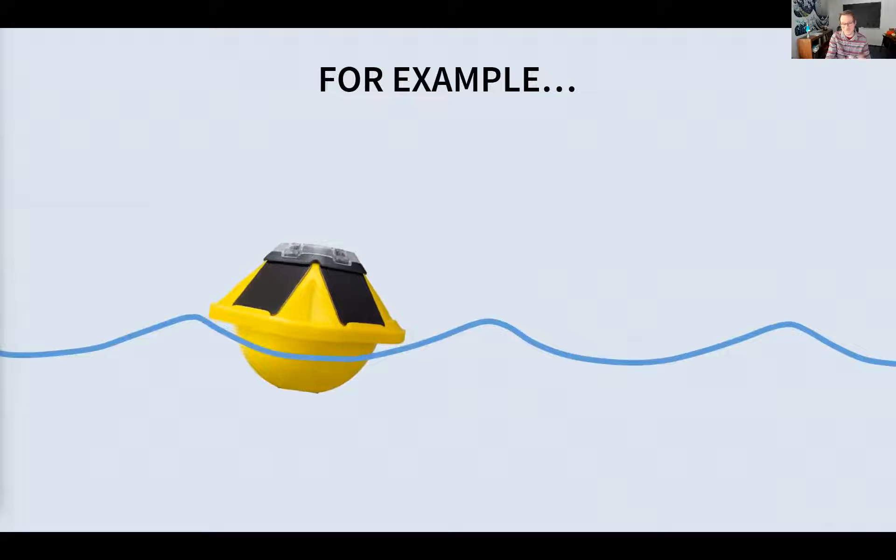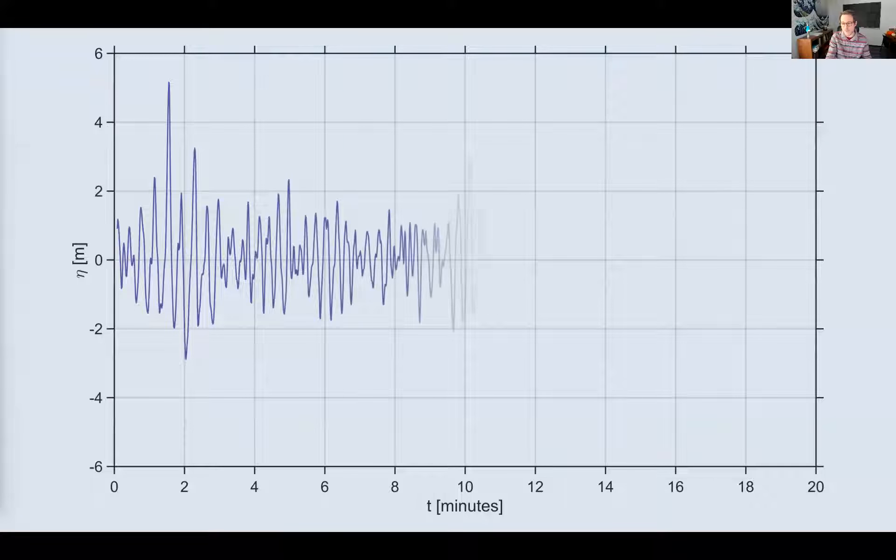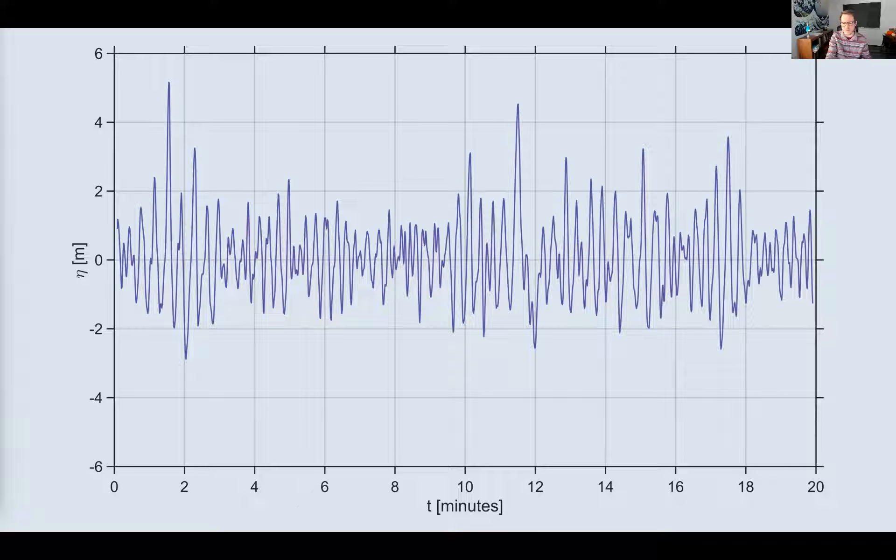As an example, let's look at a wave buoy. Wave buoys record and telemeter surface wave kinematics at a single point. They can sit out in the ocean for years, giving us long time series of wave conditions at their location. This is a 20-minute segment of the water surface vertical displacement data observed by a buoy.